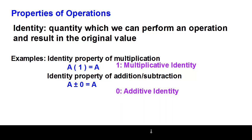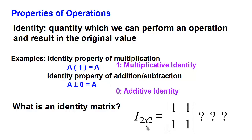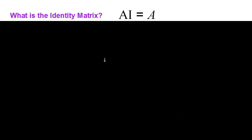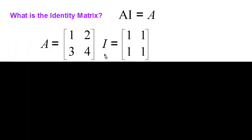So that begs the question: what's an identity matrix for multiplication? We might be tempted to say that for a two-by-two matrix, the identity matrix would be a matrix with all the elements being one, since the zero matrix has all elements that are zero. Maybe the identity matrix would have all elements being one. Let's see if that holds true, focusing on the multiplicative identity matrix.